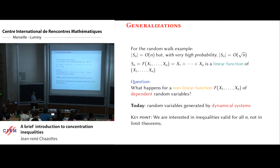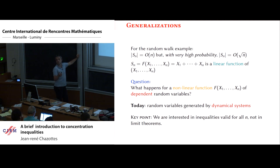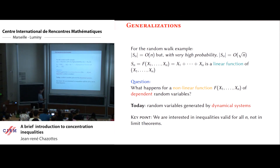People have thought about concentration for independent random variables with nonlinear functions — I will give examples later. People also started studying Markov chains and mixing processes. Today I will only speak about random variables generated by chaotic dynamical systems. A key point I want to stress: we are interested in inequalities valid for all n — we don't look for limit theorems. We want inequalities valid for all deviation values and all n.